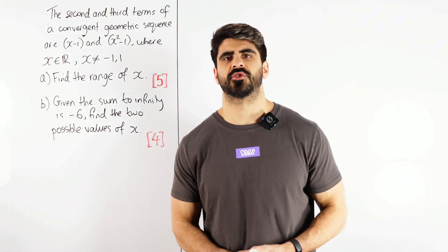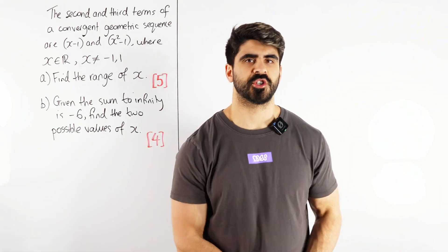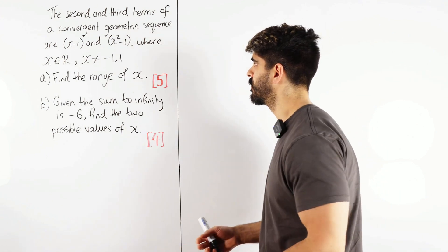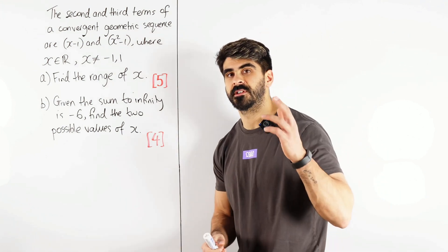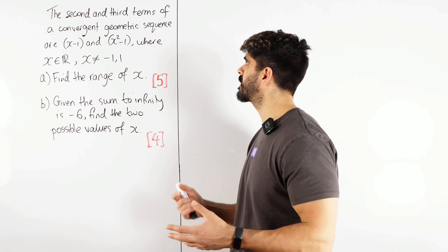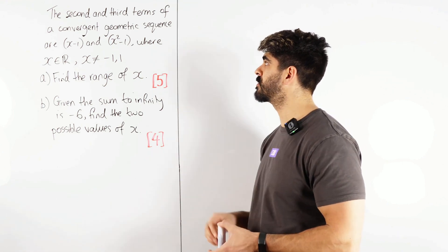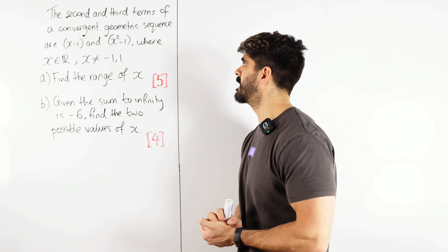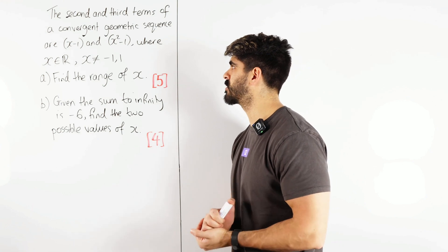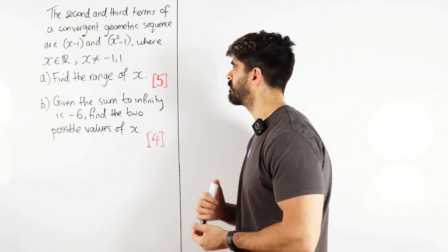Neumark geometric sequences. This question may surprise you as you've probably seen in the title - it's going to involve modulus functions. Let's see why. For the first part, five marks, we've got the second and third terms of a convergent geometric sequence are x minus 1 and x squared minus 1, where x is a real number but x cannot be minus 1 or 1. Find the range of x.